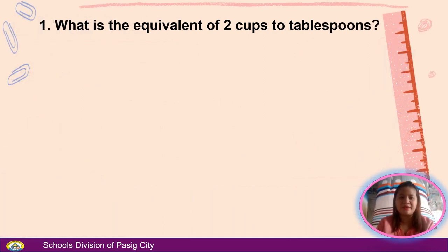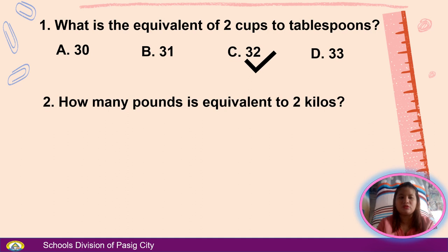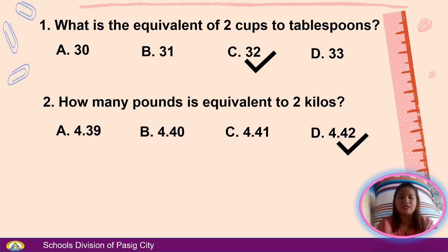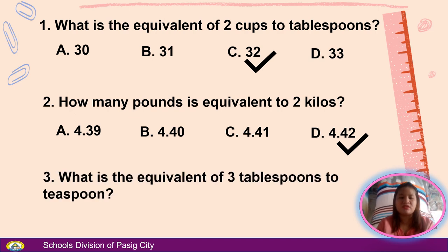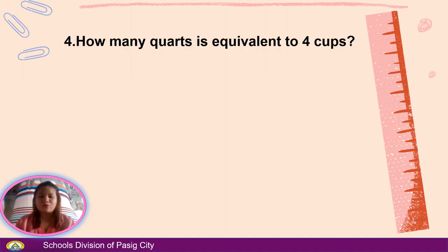Number 1: What is the equivalent of 2 cups to tablespoons? A. 30, B. 31, C. 32, D. 33. Answer: C, 32. Number 2: How many pounds is equivalent to 2 kilos? A. 4.39, B. 4.40, C. 4.41, D. 4.42. Answer: D, 4.42. Number 3: What is the equivalent of 3 tablespoons to teaspoons? A. 8, B. 9, C. 10, D. 11. Answer: B, 9. Number 4: How many quarts is equivalent to 4 cups? A. 1, B. 2, C. 3, D. 4. Answer: A, 1.